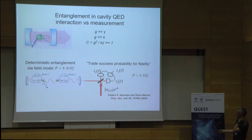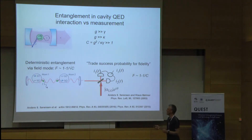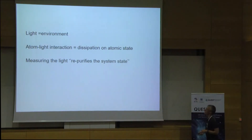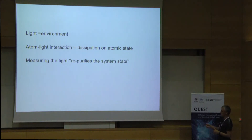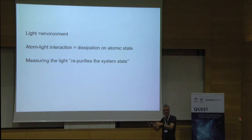Anna Sørensson, now at the Bohr Institute in Copenhagen, has developed numerous proposals using this combination of measurements together with unitary dynamics, finding the optimum trade-off between looking and just letting the system evolve. You have to choose whether you want it to work every time or accept it only works a quarter of the time but at higher fidelity as the reward. In this particular example, light was the environment and the atoms were the system. The atom-light interaction, seen from the atomic point of view, is dissipation — you're leaking into the light field. But the fact that I measure the light repurifies the system state. There's nothing lost if you can measure all the light.